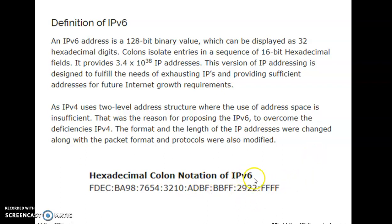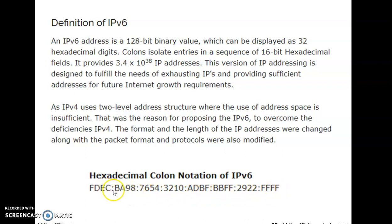In IPv6, the 128 bits are divided into 8 groups — 1, 2, 3, 4, 5, 6, 7, and 8. All these 8 groups are separated by colons and each group is made up of 16 bits, represented in hexadecimal form. So 16 multiplied by 8 gives 128 bits total.